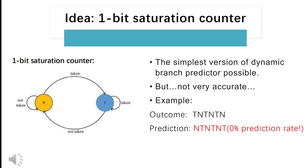To find an optimized branch prediction scheme with a lower misprediction rate and better performance, I did a review of the current mainstream branch prediction schemes to find their weaknesses that can be improved in my branch predictor.